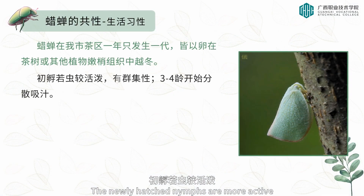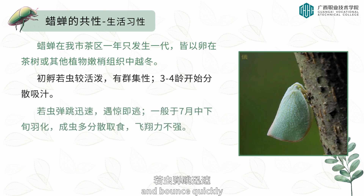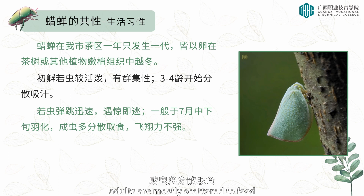The newly hatched nymphs are more active and have clustering characteristics. The nymphs begin to absorb juice at the third to fourth instar and bounce quickly, fleeing when they are frightened. Generally, eclosion occurs in the middle and late July. Adults are mostly scattered to feed, and their flying ability is not strong.